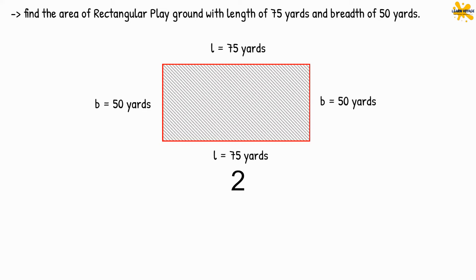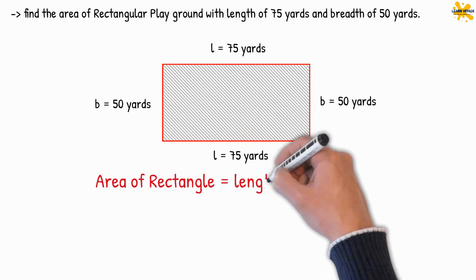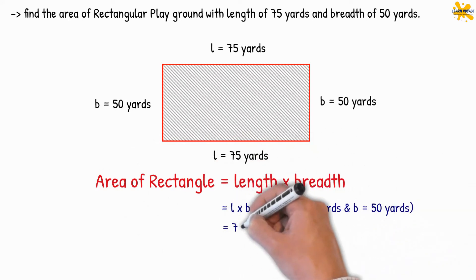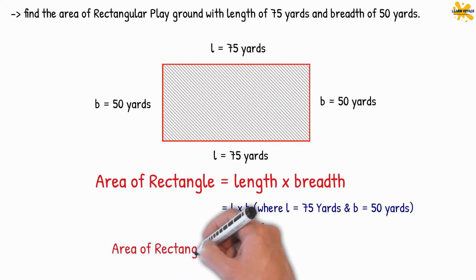Do you need help with calculations? Here we will multiply 75 with 50. You should get area equal to 3750 square yards.